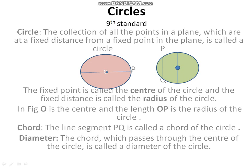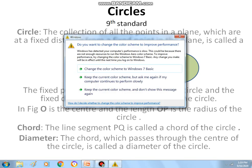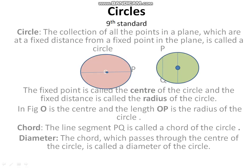A circle is a plane figure which is the collection of all the points in a plane that are at a fixed distance from a fixed point in the plane. That plane figure is called a circle.